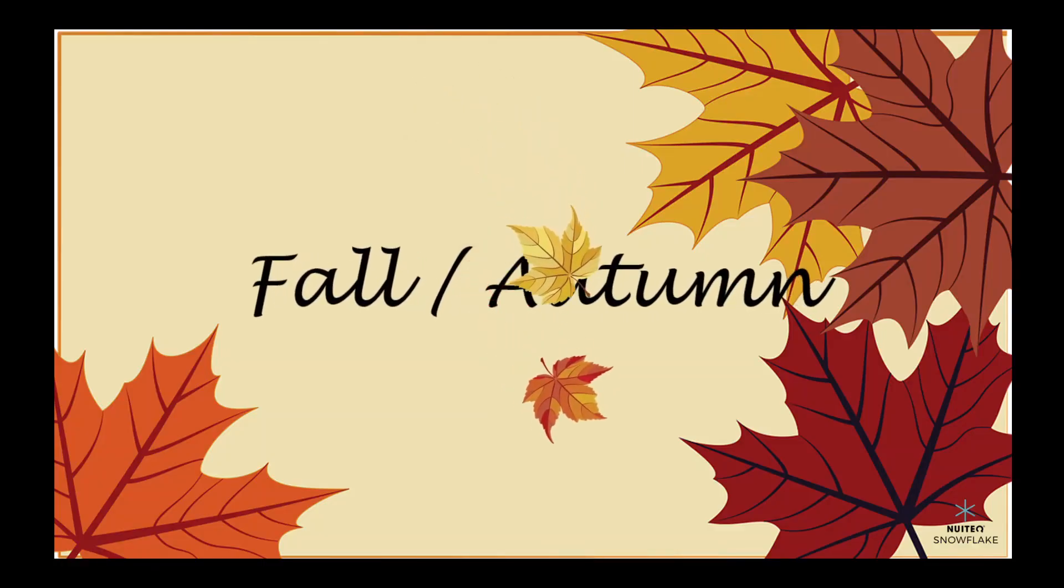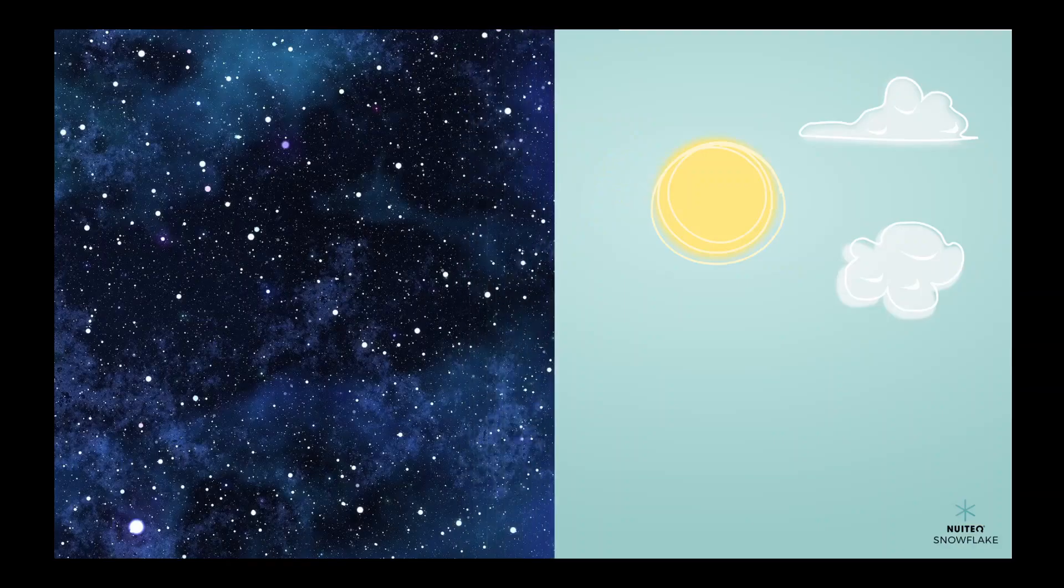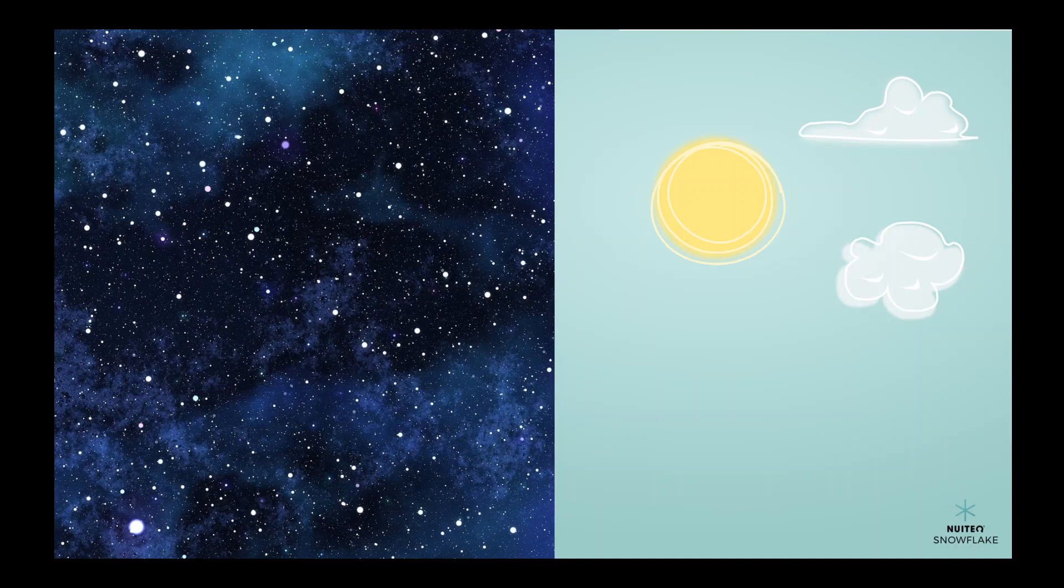After summer comes fall, also known as autumn. This is the season when the leaves on the trees start to change colors and fall off. During fall, the earth's northern hemisphere starts to tilt away from the sun, which means that the days start to get shorter and the nights get longer. This is why we start to see less sunlight and more darkness as fall progresses.